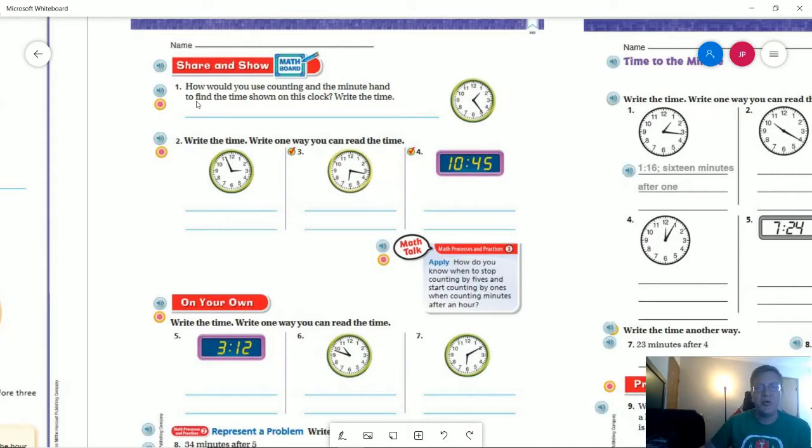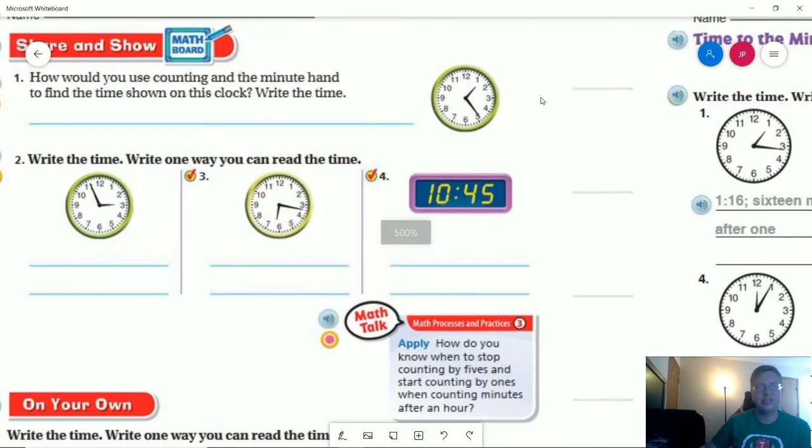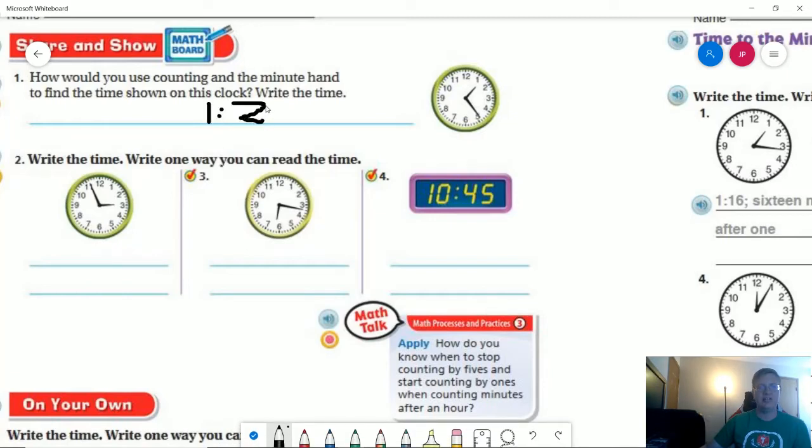Number one, how would you use counting and the minute hand to find the time shown on the clock? Our minute hand if we zoom in really close, we are on 24. If we are using counting we can count by fives, 5, 10, 15, 20 and then we would count by ones 21, 22, 23, 24 and our time would be 1:24.